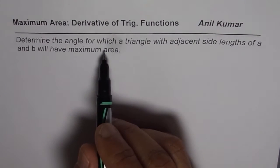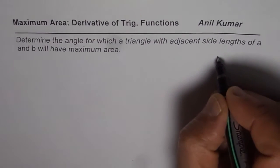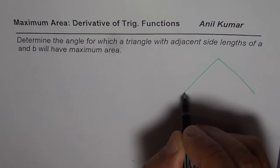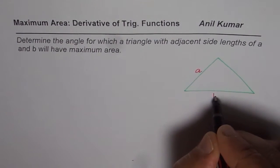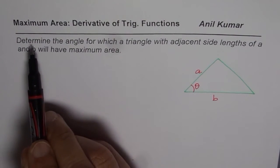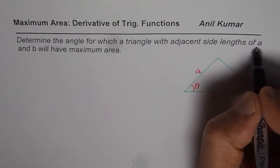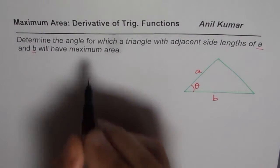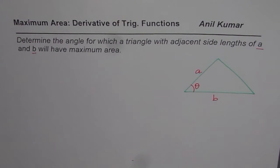Determine the angle for which a triangle with adjacent side lengths of A and B will have maximum area. Let me sketch one triangle here. So any general triangle — let's say this is a triangle whose sides are A and B, with the angle between them as theta. We need to find the angle for which this triangle will have maximum area.